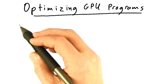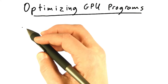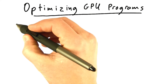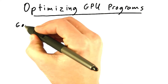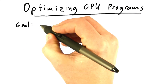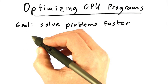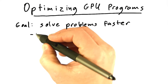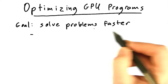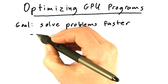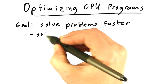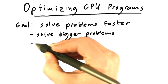Today we're going to talk about optimizing GPU programs. The whole reason we want to use a parallel platform like the GPU is to solve problems faster. And in turn, the reason we might want to solve problems faster could be simply because we want to solve a problem faster, or more often it's because we want to solve bigger problems or solve more problems.